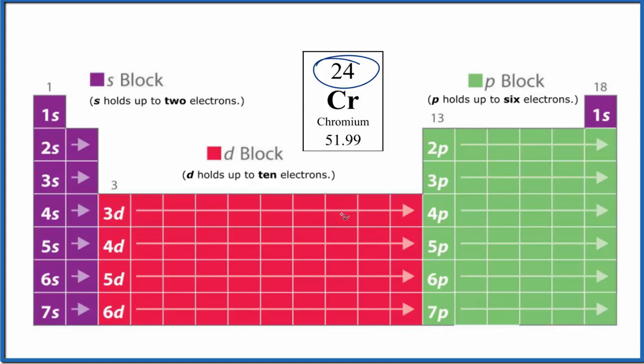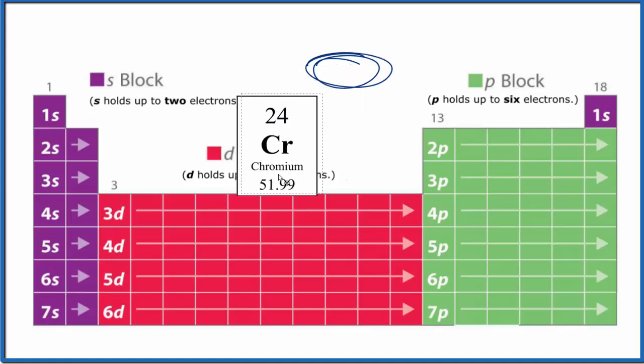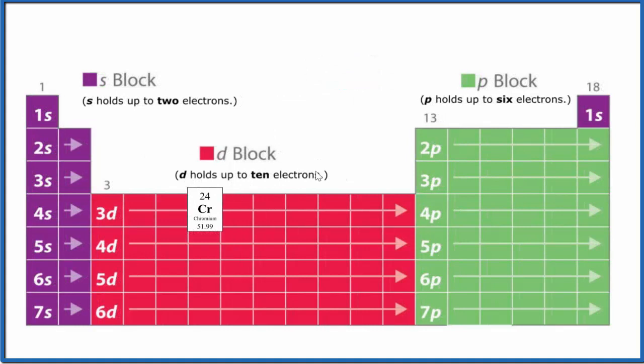So we'll work with that number, 24, to write our electron configuration. Chromium is right here, and we'll use the condensed electron notation, so we're going to start with argon right here, and that gets us up to 3p6. So after 3p6 we go to the fourth energy level.